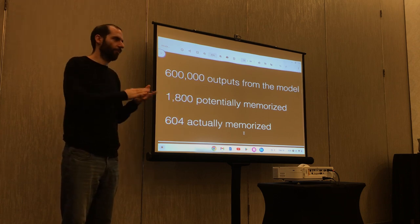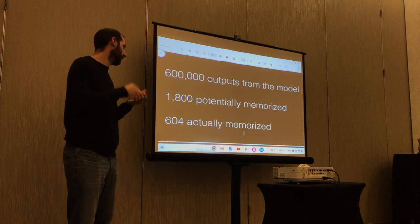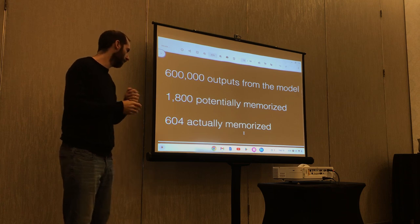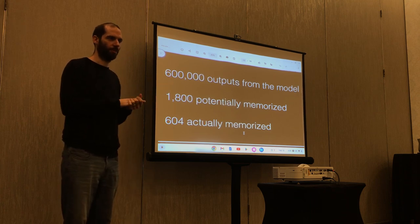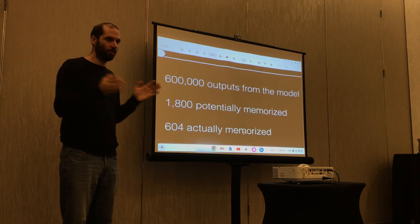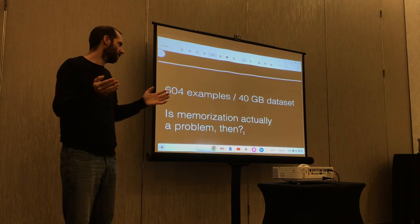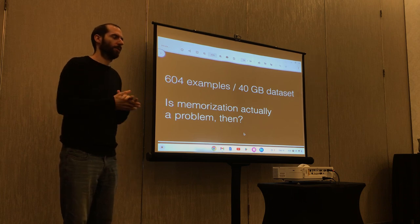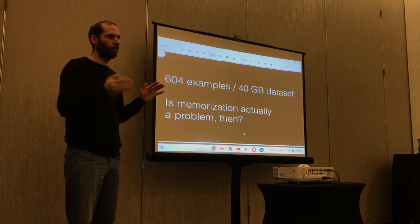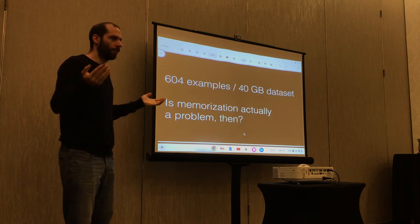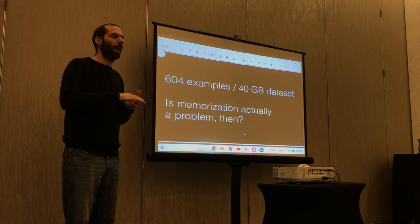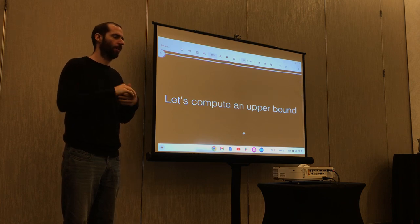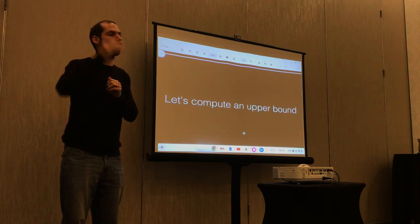In the paper we wrote previously, we did 600,000 generations. Of these, we determined 1,800 were potentially memorized. With manual verification, we filtered this down to 604 that were actually memorized. This is a lot of memorization, but 600 examples out of a 40-gigabyte dataset is a very, very small number. We never believed this was an upper bound — we only wanted to claim extraction is possible and establish a lower bound of what you can achieve.